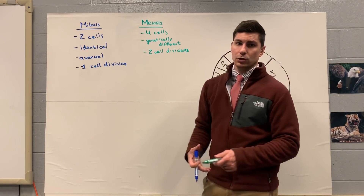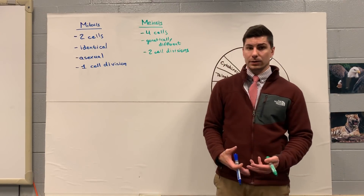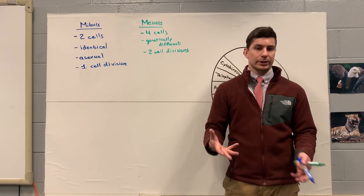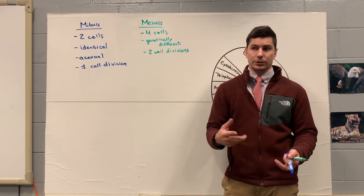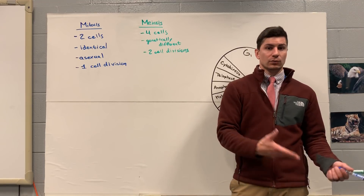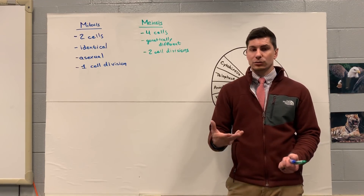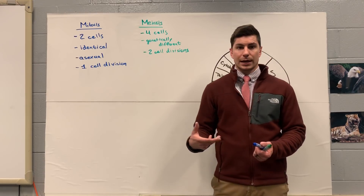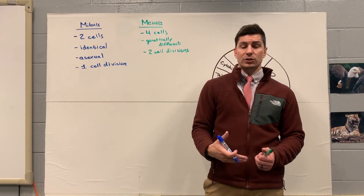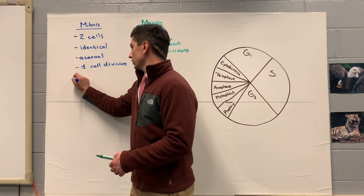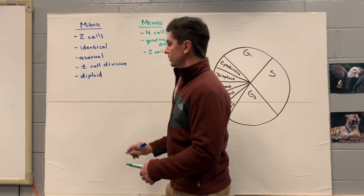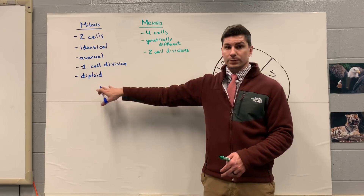For human cells, we have 23 pairs of chromosomes. Just like a pair of shoes, you have two. 23 times two is 46, so that's why we have 46 chromosomes. But each chromosome, we have two copies of it. So for mitosis, these are our normal cells - we want each one of these cells to have 46 chromosomes. We call them diploid. Di meaning two - we have two copies of each chromosome in these cells.